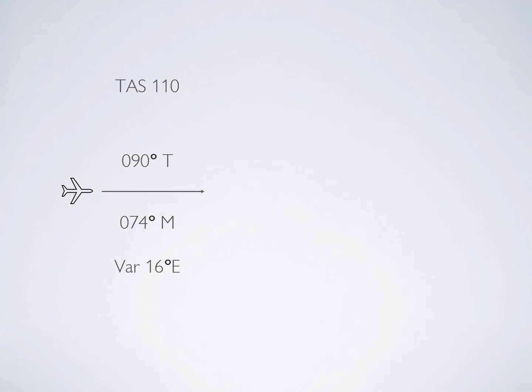Let's say, for example, that we planned a flight with a true airspeed of 110 knots and a heading of zero nine zero degrees true. Then when we're in flight, we realize that our ground speed is only 100 knots. And that in order to stay on course, we have a heading correction of six degrees to the right.